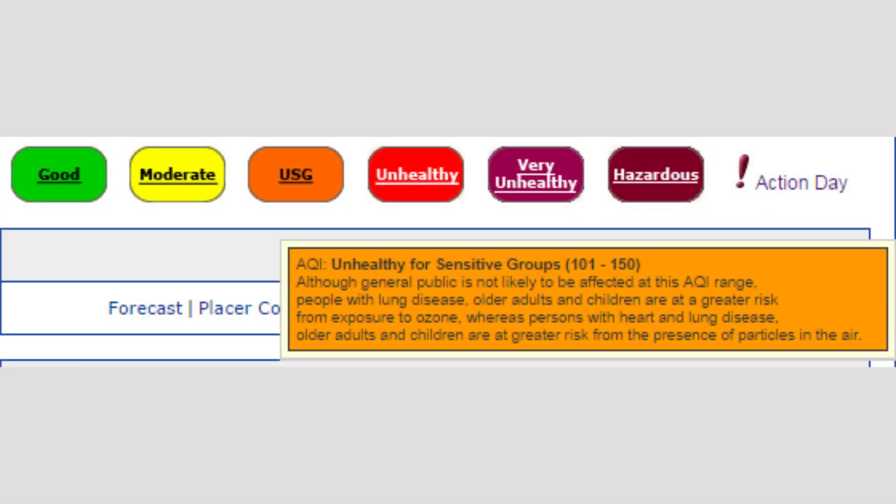It means members of sensitive groups may experience health effects. The general public is not likely to be affected. Those groups expected to be more sensitive to air pollution are people with heart or lung disease, children and the elderly. Other levels of air quality describe how different groups of people are affected by the current level of air quality.